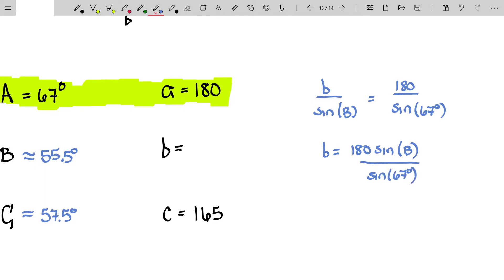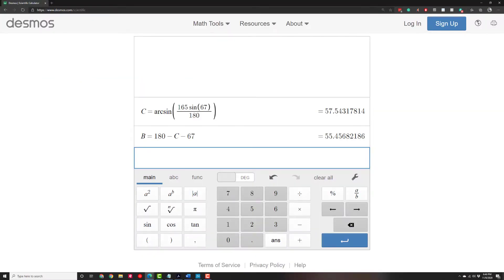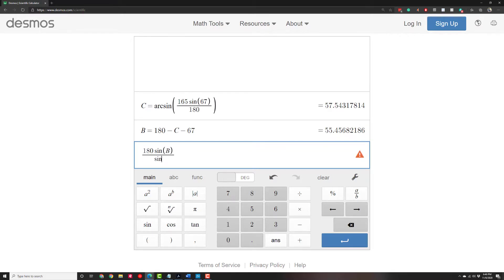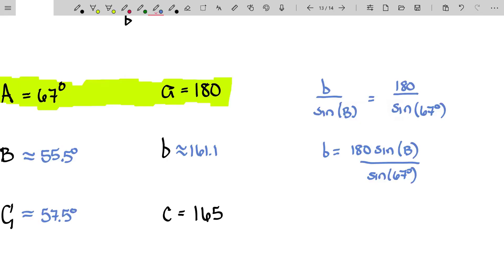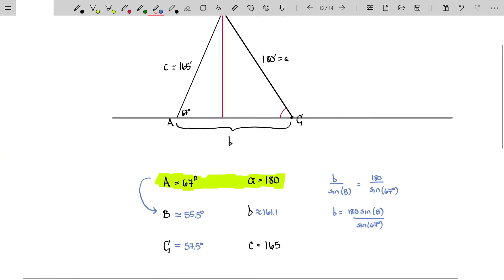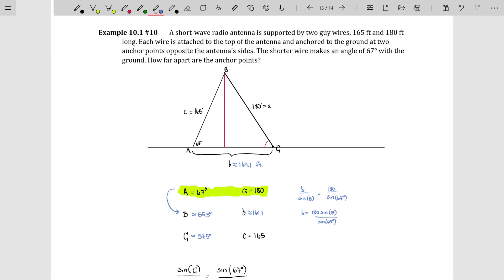And then I'll just hop over to Desmos to finish this out. So here I am in Desmos and we're going to just type in here 180 sine of B divided by a sine of 67 degrees. That's 161.1. This is in feet. So 161.1 feet apart. That's the distance between those two anchor points.